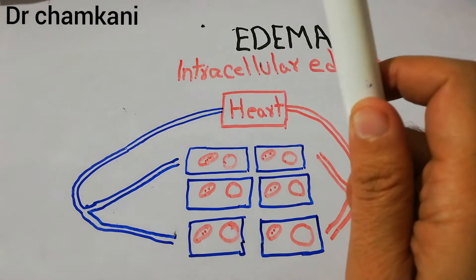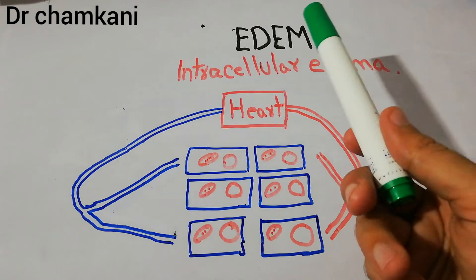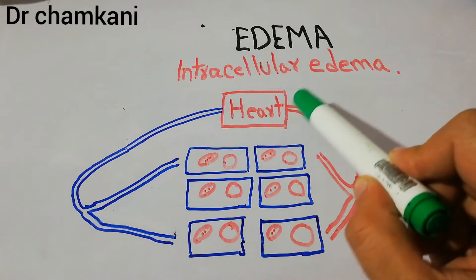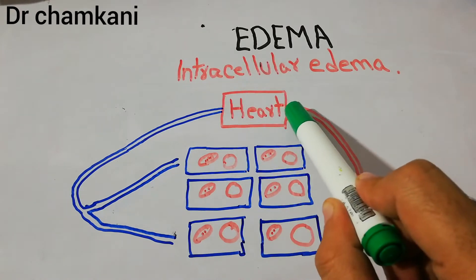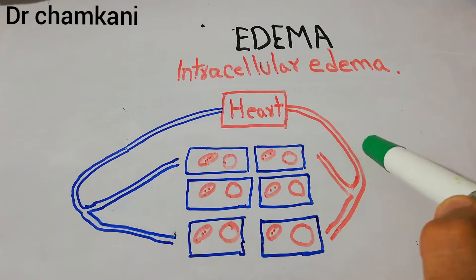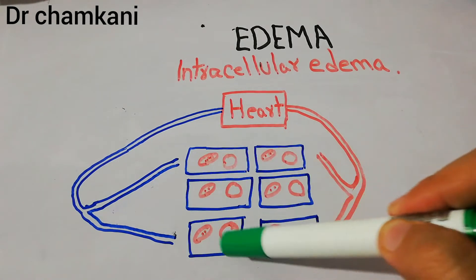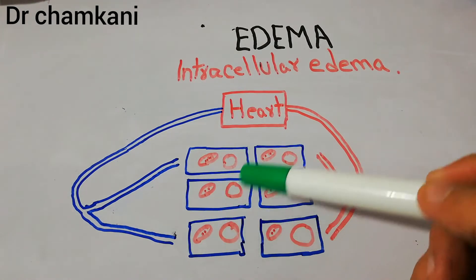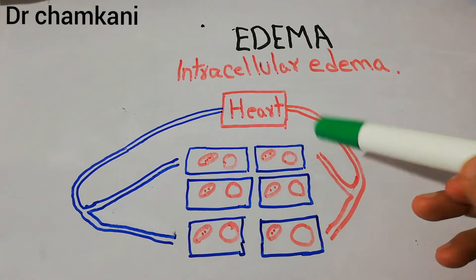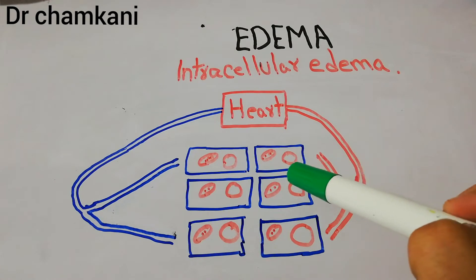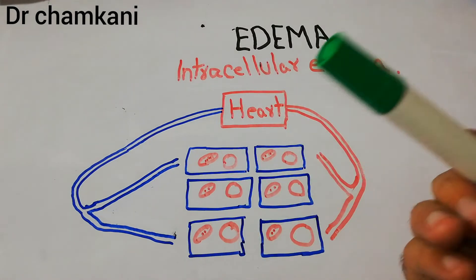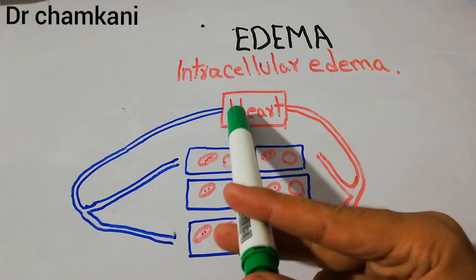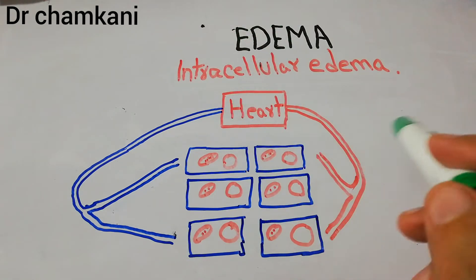Now, what basically is intracellular edema and its causes? Consider a human body — the heart is pumping oxygenated blood into the aorta, from the aorta into the arteries and arterioles, and through different capillaries it reaches the different organs. Inside the organs there are tissues made of cells. The cells consume oxygen and nutrients from the oxygenated blood, and then the deoxygenated blood returns through the capillaries, venules, veins, and vena cava into the heart, which pumps it to the lungs to get oxygenated again.